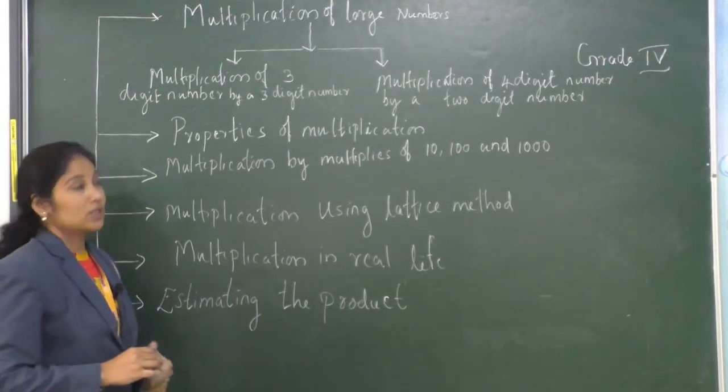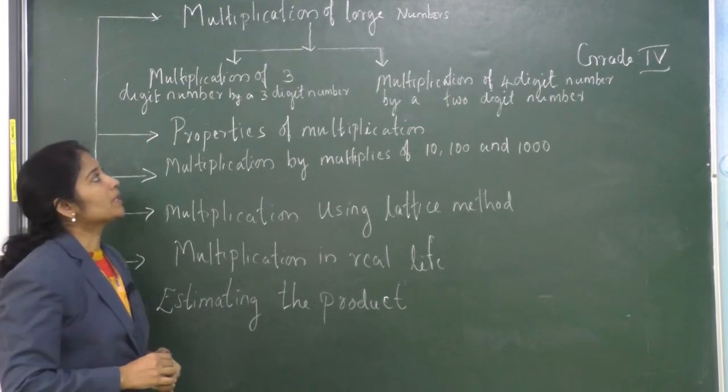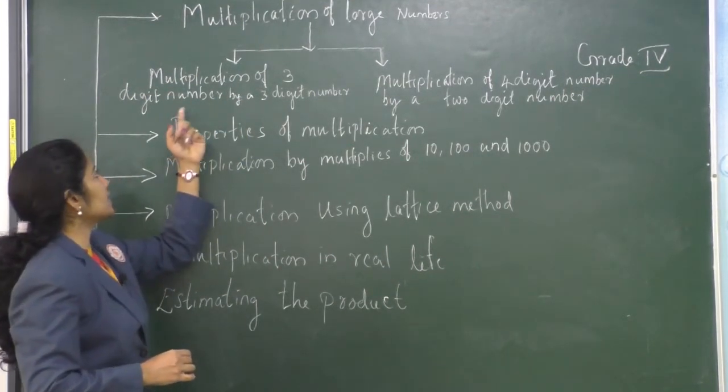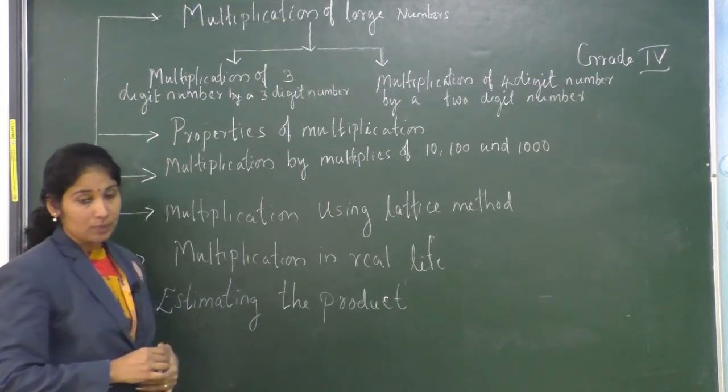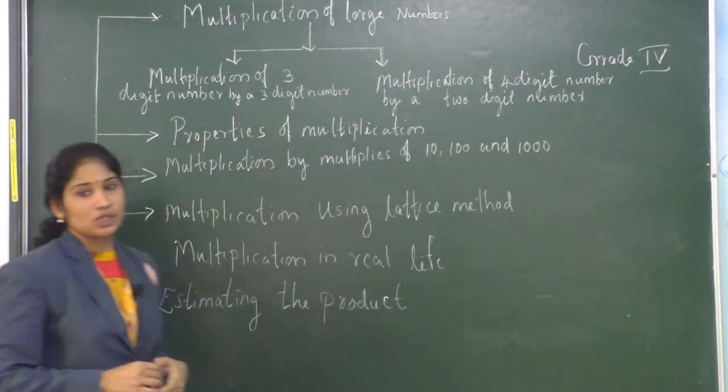Children, here is the mind map of chapter 4, multiplication. The main topics are multiplication of large numbers. Here, we learn multiplication of 3-digit numbers by a 3-digit number and multiplication of 4-digit number by a 2-digit number.